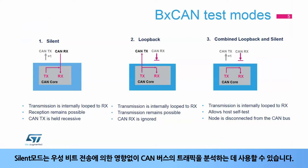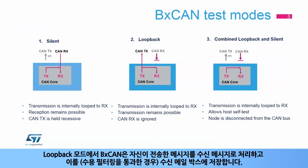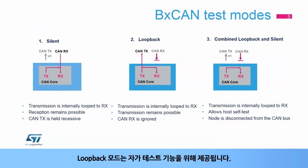Silent mode can be used to analyze traffic on a CAN bus without affecting it by the transmission of dominant bits. In loopback mode, the BX CAN treats its own transmitted messages as received messages, and stores them, if they pass acceptance filtering, in a receive mailbox. Loopback mode is provided for self-test functions.